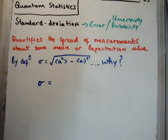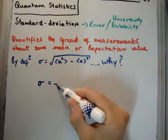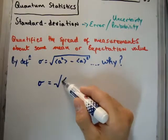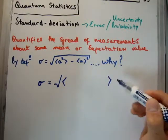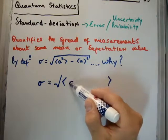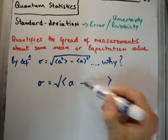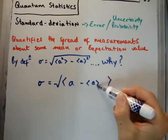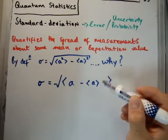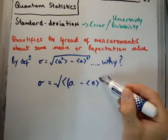It's the following, it's the square root of the average, so use these angle brackets for average. Your value of your observable minus the average value of your observable. Okay? And this is squared.